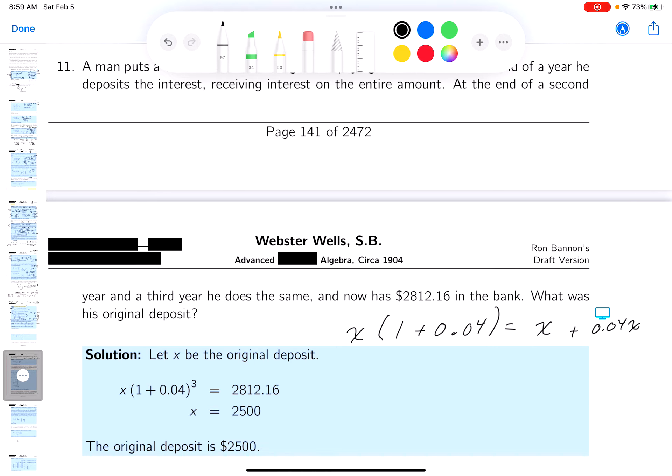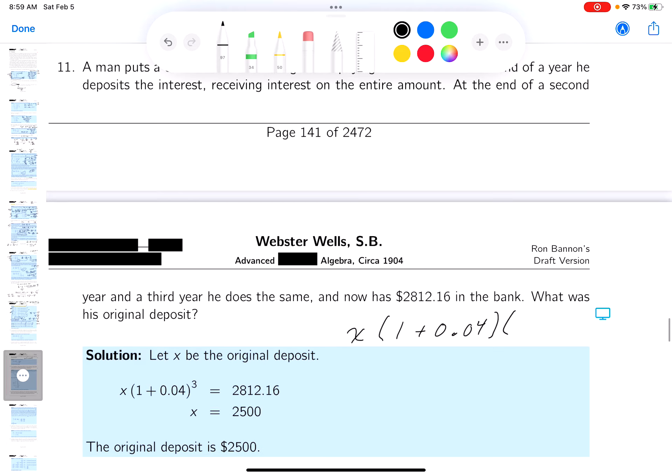And that's how much money he would have at the end of the year. But remember, he doesn't take the interest. He leaves it in the bank. And he keeps repeating this. So if he does it again, it's really going to be the same thing. So at the second year, he does the same exact thing. He leaves the money in there, and he still gets the interest. So now he's getting interest on interest.